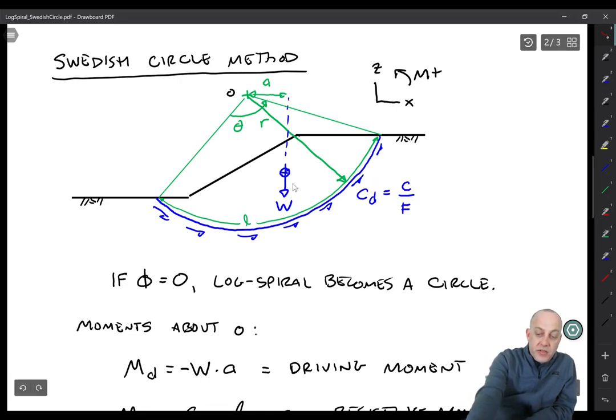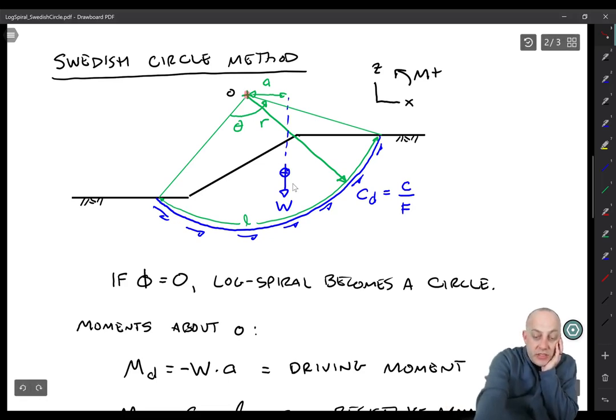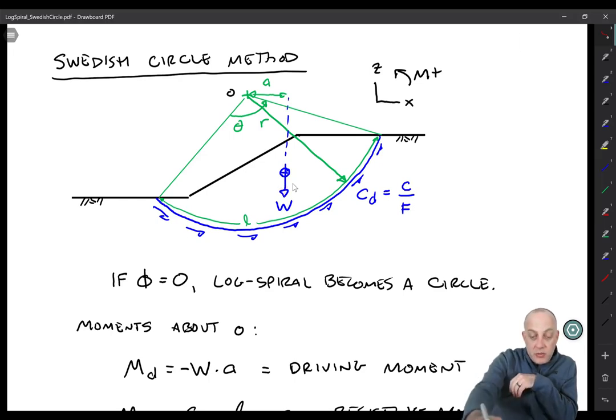Phi is equal to zero, so c sub d or tau, the resisting shear stress is just equal to cohesion divided by F or undrained strength divided by F. And so we can do moment equilibrium about this center O. And the driving moment is equal to minus W times A. Notice I have a sign convention up here for moment that counterclockwise moments are positive.